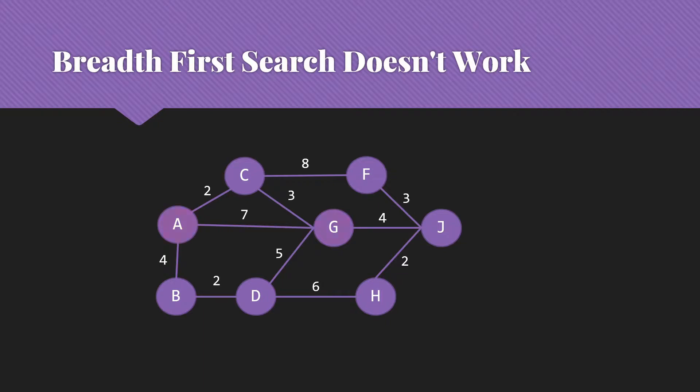If we use breadth-first search, then it's going to pick the path from A to G. But we note that if we're paying attention to the costs, we have a better option from A to C to G.